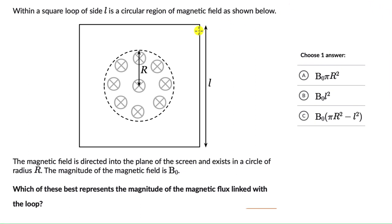Within a square loop of side L is a circular region of magnetic field as shown below. We can have a look at the diagram. The magnetic field is directed into the plane of the screen and exists in a circle of radius R, and the magnitude of this magnetic field is B0.